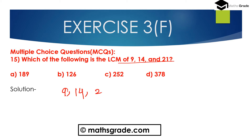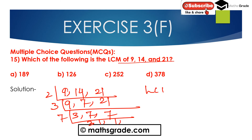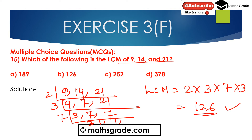Dividing 9, 14 and 21: first divide by 2 — gives 9, 7, 21. Then divide by 3 — gives 3, 7, 7. Then divide by 7 — gives 3, 1, 1. So the LCM of 9, 14 and 21 is 2 multiplied with 3 multiplied with 7 multiplied with 3, which equals 2 × 3 = 6, 6 × 7 = 42, 42 × 3 = 126. So LCM of 9, 14 and 21 is 126.